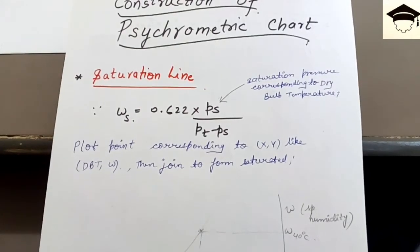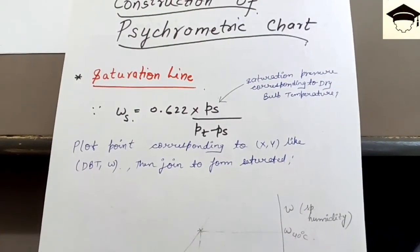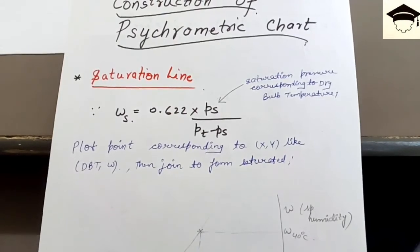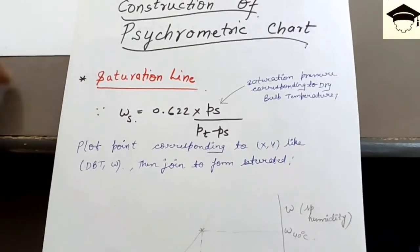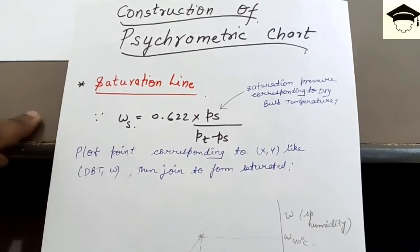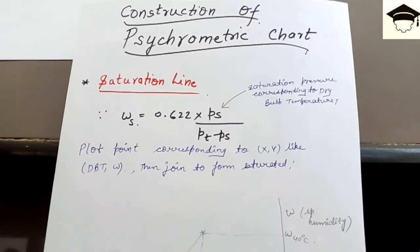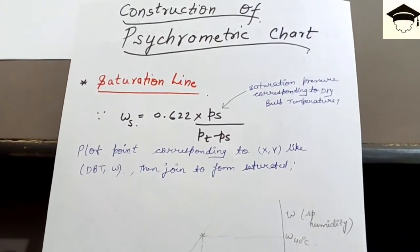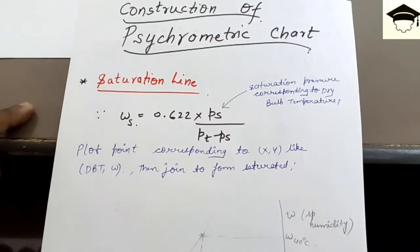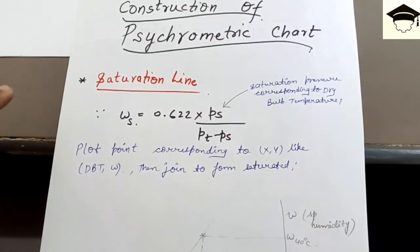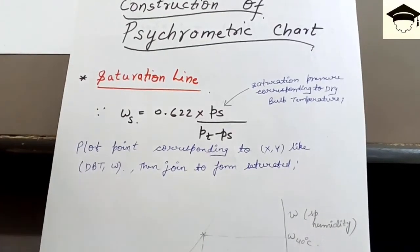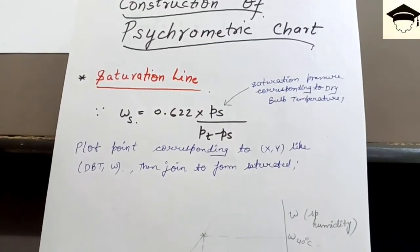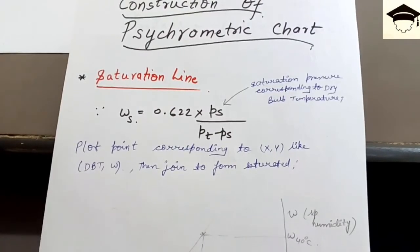Now starting with the video: construction of the psychrometric chart. First I will explain how to construct the saturation line, then constant specific volume lines, then constant enthalpy lines, then constant relative humidity lines, and finally constant wet bulb temperature lines.